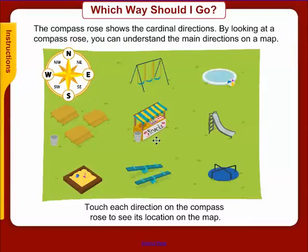We're going to talk about the compass rose. The compass rose is a drawing that will indicate the different directions. All compass roses are going to give you the cardinal directions: north, south, east, and west. By looking at a compass rose, you can understand the main directions of a map.